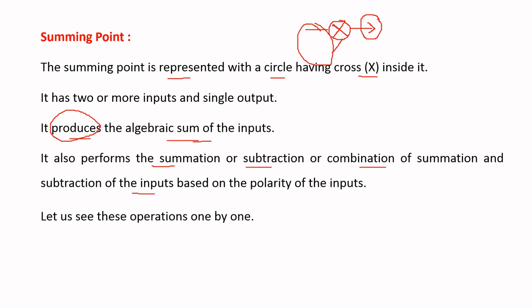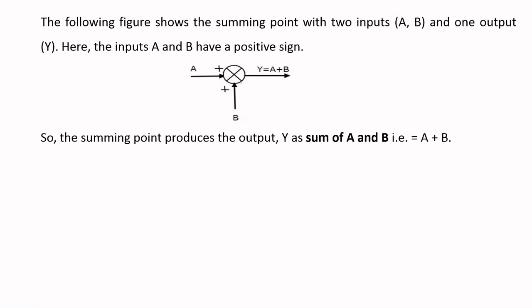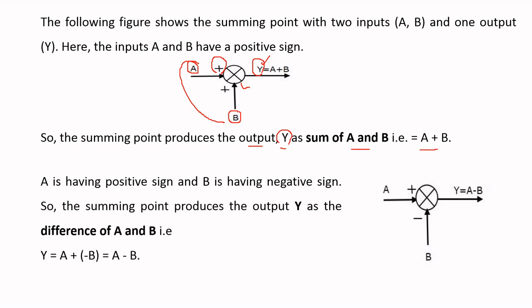Now consider a summing point with two inputs a and b, both having positive polarity. The output y is the algebraic sum of these two inputs, so y = a + b. Similarly, consider another summing point with two inputs: input a has positive polarity and input b has negative polarity. The output is y = a − b. These are the operations performed at a summing point.